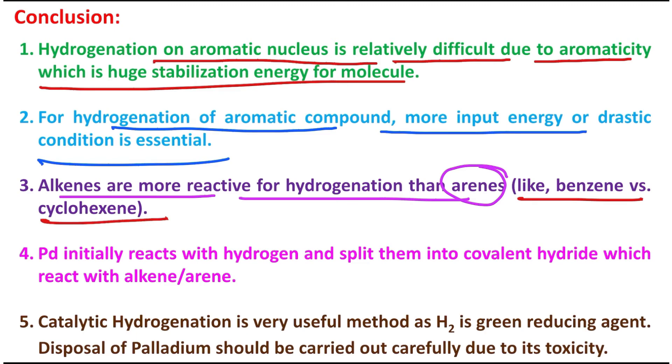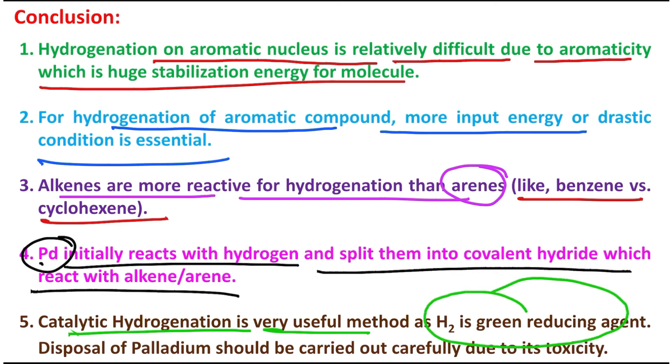Palladium acts as catalyst here. Initially it reacts with hydrogen and splits them into covalent hydride, which is subsequently transferred to the pi bond of alkene or arene, and it reduces them to the corresponding saturated analog. This catalytic hydrogenation is a very useful method as hydrogen is one of the green reducing agents. But the main problem is the disposal of palladium, which should be very careful because palladium is toxic and costly. That's why you should try to reuse as much as we can.